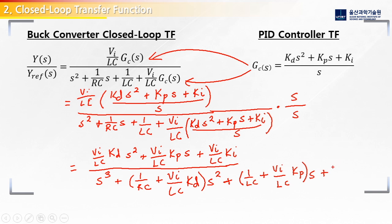And then our last term is going to be Vi over LC multiplied by KI. So here's our little bit long equation here.